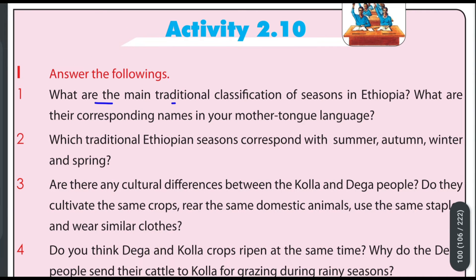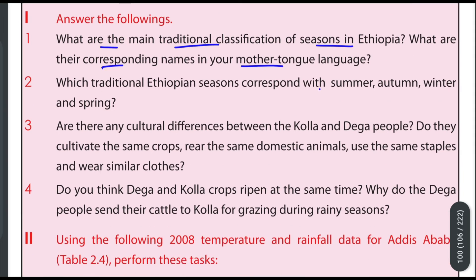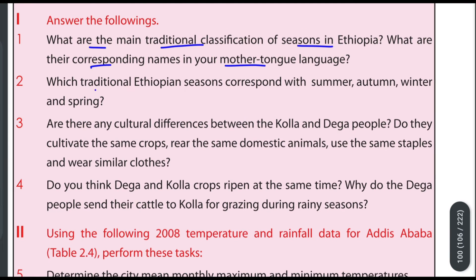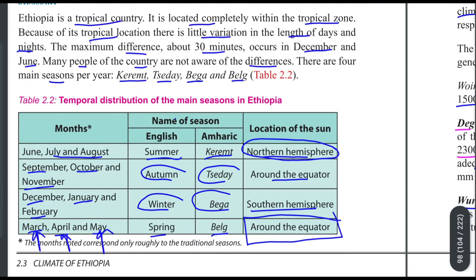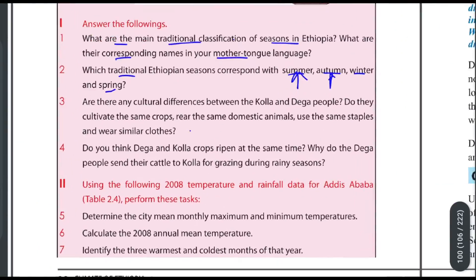What is the main traditional classification of seasons in Ethiopia? What are their corresponding names in your mother tongue language? The traditional Ethiopian seasons correspond with summer, autumn, winter, and spring, though they are not known by the same names as in other countries.